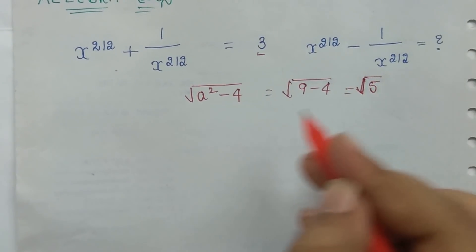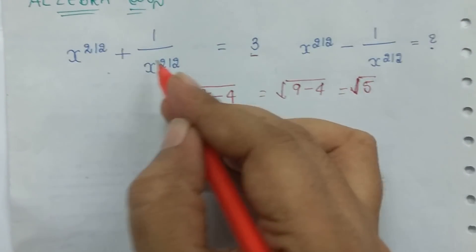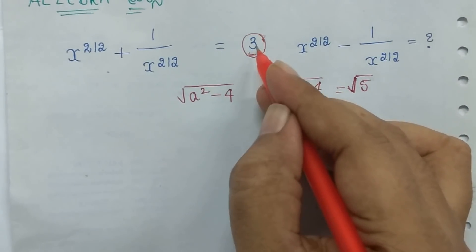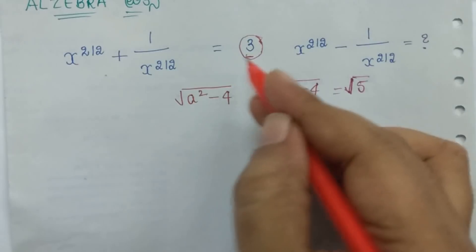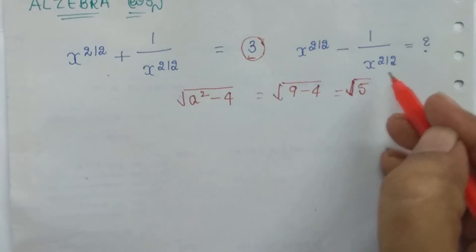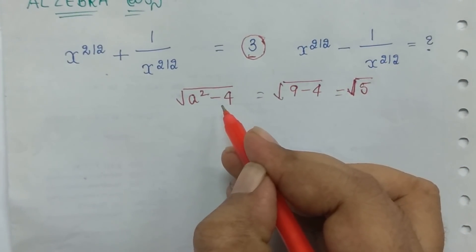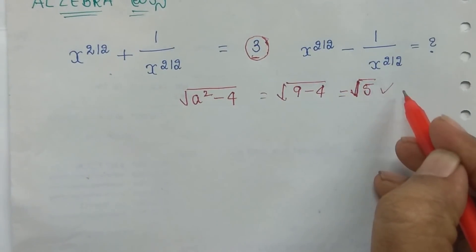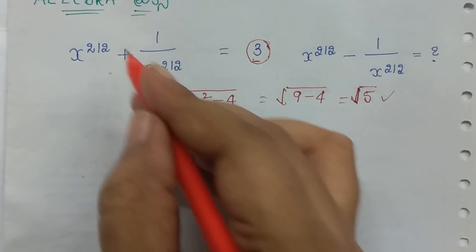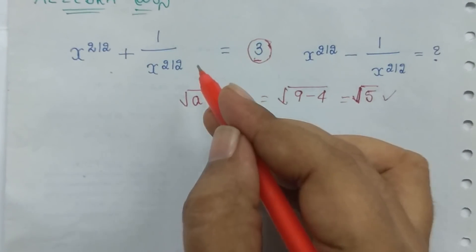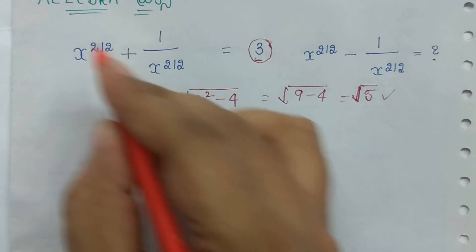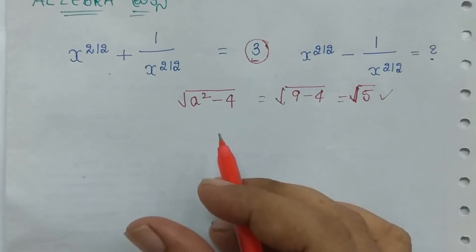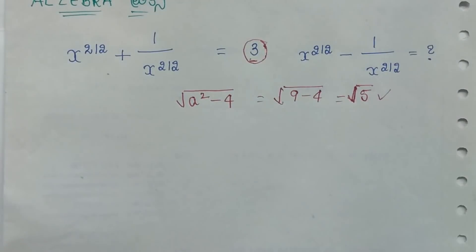So direct value shortcut. x plus 1/x is related to x minus 1/x by the formula root(a² - 4). This is a substitute: a² - 4 gives root 5. The direct answer is 8. So here is the direct result. Now you can understand the concept. This is clear.